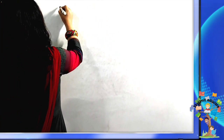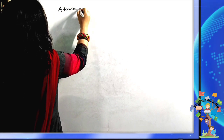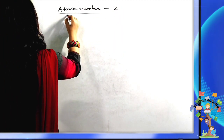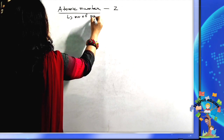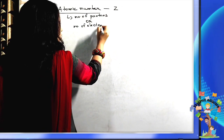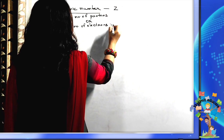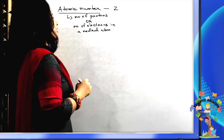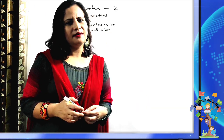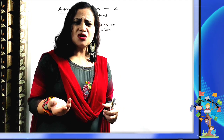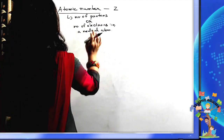Now let us discuss atomic number and mass number. Atomic number, represented by the letter Z, refers to the number of protons, or the number of electrons in a neutral atom. Both are equal in a neutral atom, but when the atom becomes an ion, the number of electrons changes — it either increases or decreases.